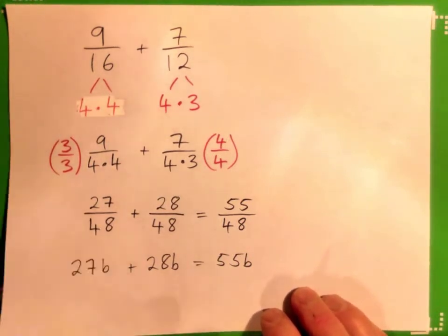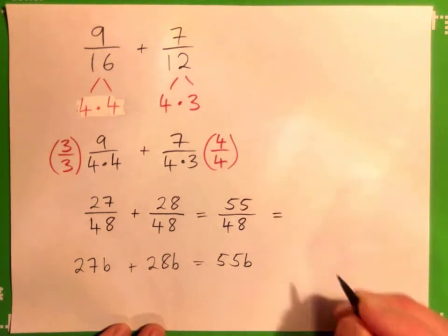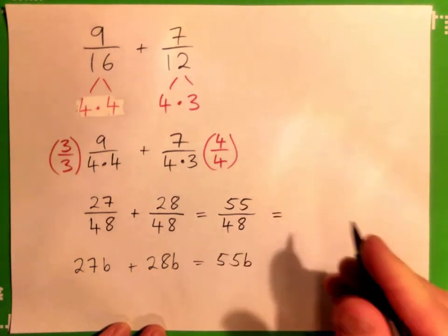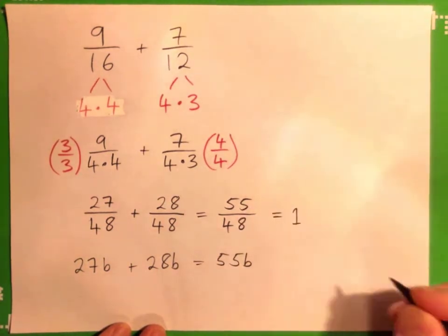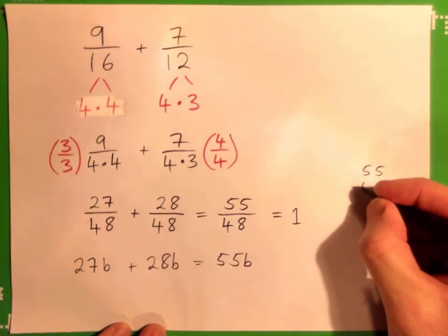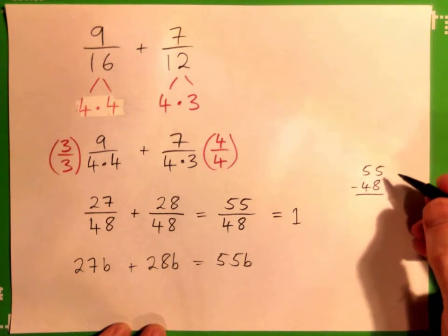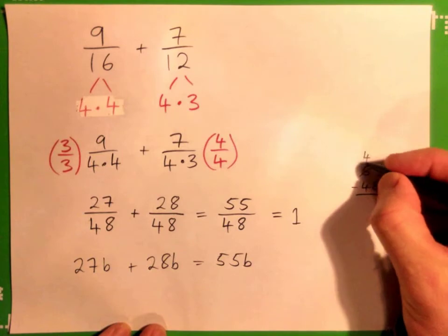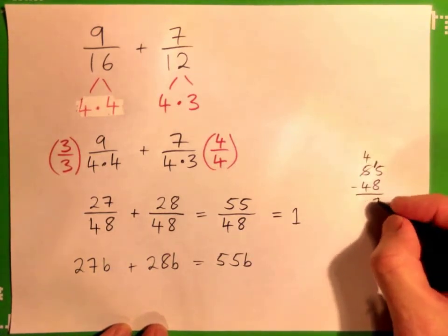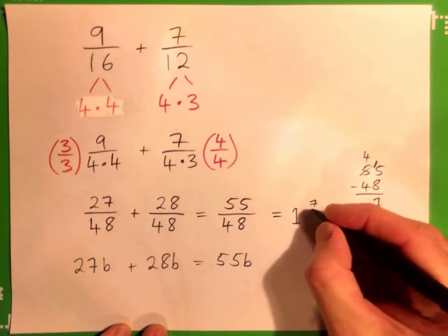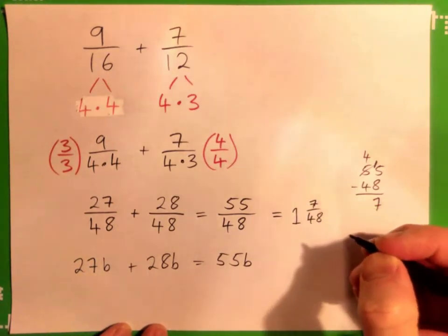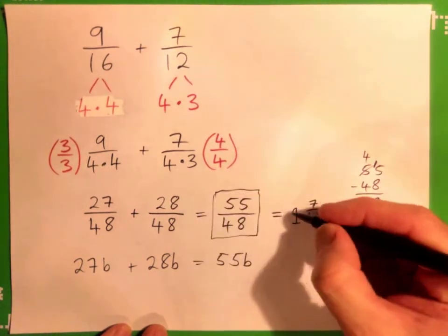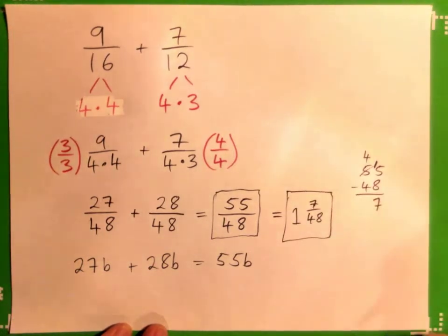So that's correct, and we can also write this as a mixed number for fun. You go 48 into 55 goes how many times? One time, and what's the remainder? The remainder is 55 minus 48. I need to carry, that becomes a 4, that becomes 15, and 15 minus 8 is 7. So 1 and 7 forty-eighths. That's the answer as a mixed number.